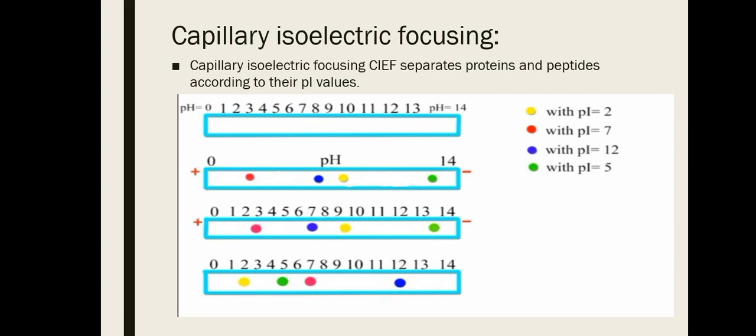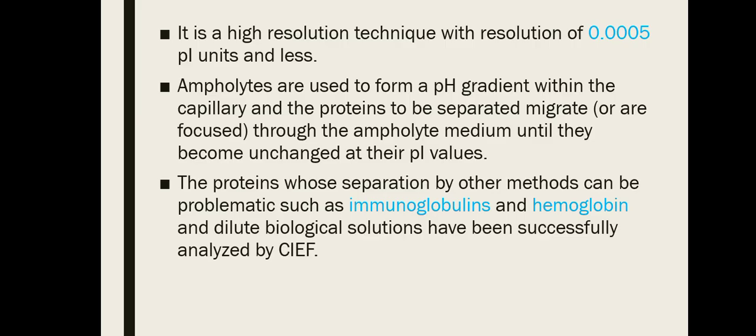This is a highly resolution technique with a resolution of 0.0005 PI units or less, meaning molecules with a PI difference of 0.0005 can be distinguished. Ampholytes are used to form a pH gradient within the capillary, and the proteins to be separated migrate through the ampholyte medium until they become uncharged at their PI value.